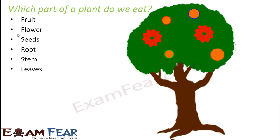We also talk about crop yield. This is where we get the fruits, vegetables, and cereals — whatever we eat in our diet. Now the question is: we get all of these from plants, but which part of a plant do we actually eat?